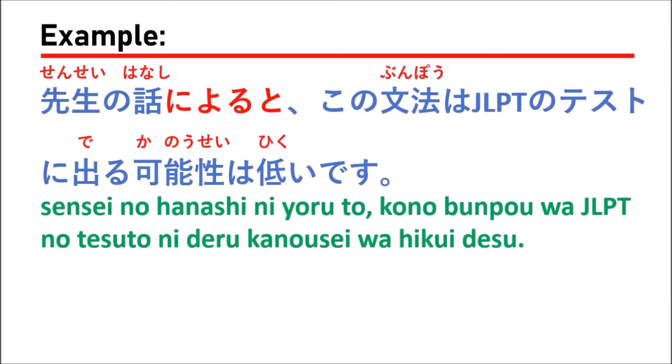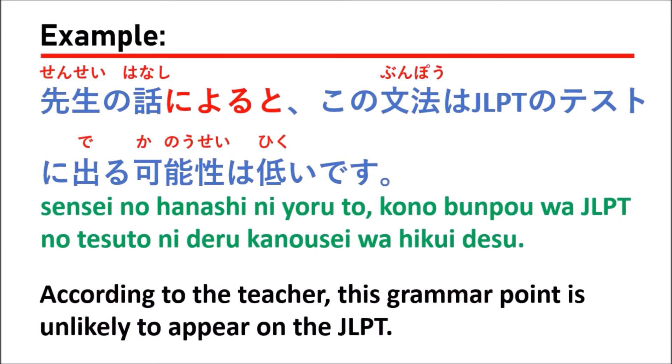The next example: 先生の話によるとこの文法はJLPTのテストに出る可能性が低いです。 Which means: according to the teacher, this grammar point is unlikely to appear on the JLPT.